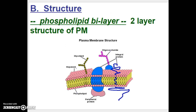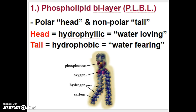We discussed phospholipids in Chapter 6 — a special kind of lipid in the plasma membrane. The plasma membrane is made of two layers of phospholipid, so we call it the phospholipid bilayer, because 'bi' means two. The phospholipid molecule has a polar head — the phosphorus and oxygen portion, which is hydrophilic, or water-loving — and a nonpolar tail — the hydrogen and carbon portion, which is hydrophobic, or water-fearing. This is what the plasma membrane looks like with two layers of the lipid.